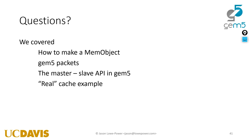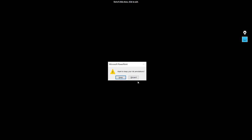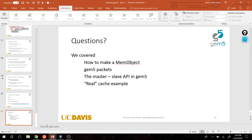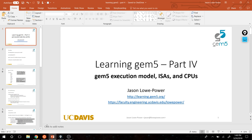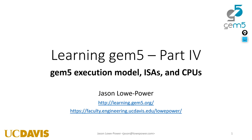That finishes the simple cache section. Next, we'll take a quick poll: we can either step away from the memory system and talk about CPUs, or we can talk about cache coherence. The vote is overwhelmingly for CPUs, so we'll do cache coherence after — I think we need coffee to get into cache coherence.